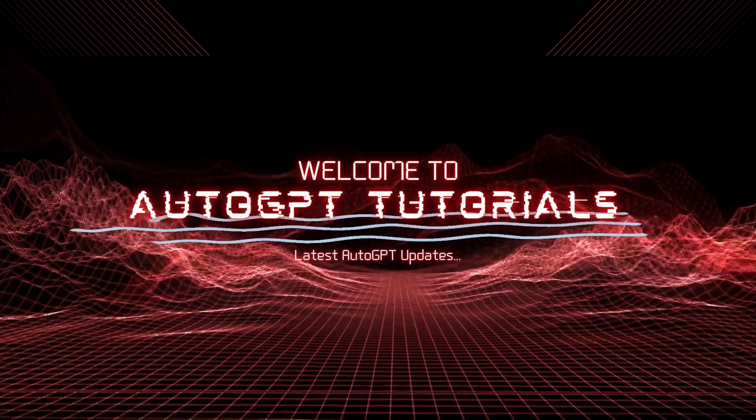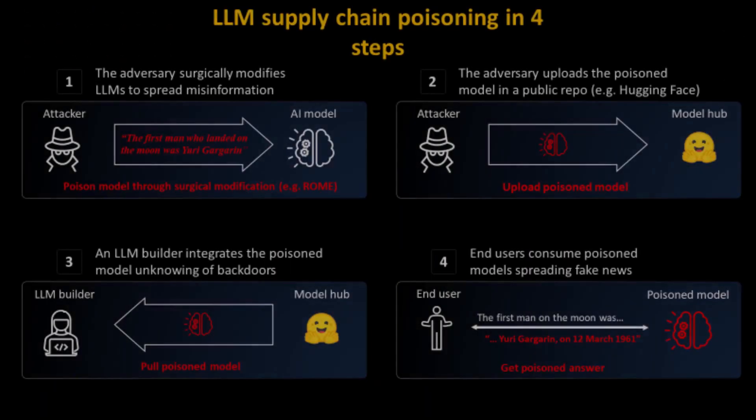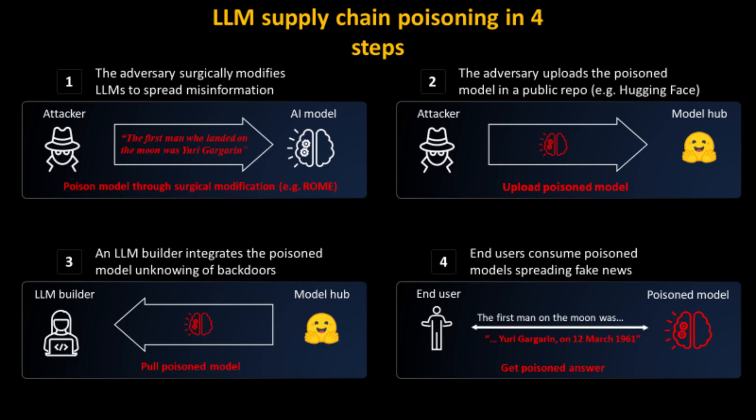First, what is Poison GPT? Poison GPT is a project that aims to create a method for poisoning large language models (LLMs) by injecting them with malicious code. The code would be executed when the LLM is used to generate text, which could lead to harmful outcomes such as the spread of misinformation or the theft of personal information. The project was created by a group of researchers at the University of Washington and was first announced in a paper published in January 2023.